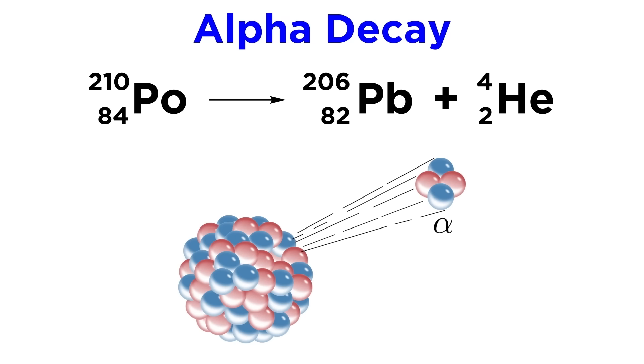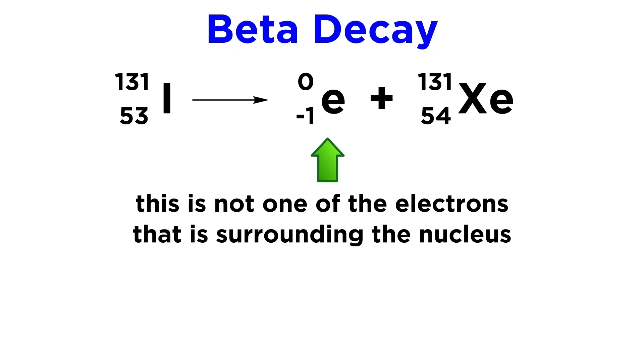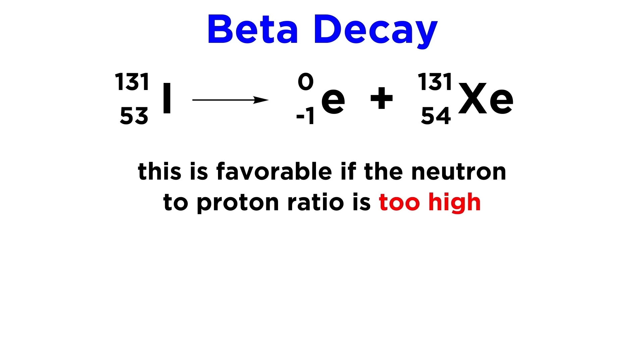Next is beta decay. This is when a nucleus like iodine-131 emits an electron to become xenon-131. The reason this occurs is because a neutron is converted into a proton. This electron is not one of the electrons surrounding the nucleus. It is a completely different electron emitted during this transformation. This is a kind of decay that can occur if the neutron to proton ratio is too high, meaning too many neutrons and not enough protons. Changing one neutron into a proton will stabilize this kind of nucleus.